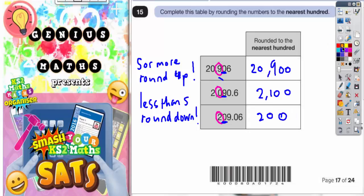So your final answers are 2,100 for the middle one, 200 for the bottom one, and 20,900 for the top one. There we go.